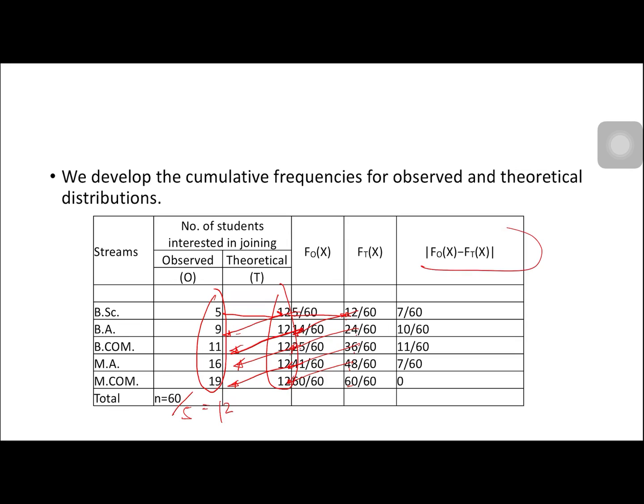We get the difference between the observed and the theoretical distributions. We have 7 over 60, 10 over 60, 11 over 60, 7 over 60, and 0. Please take note, our maximum absolute value is 11 over 60.